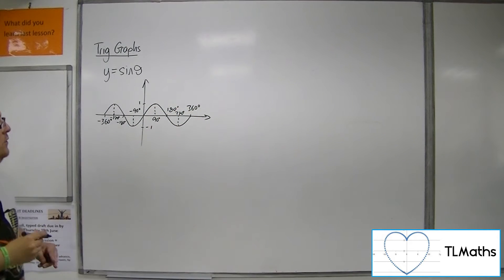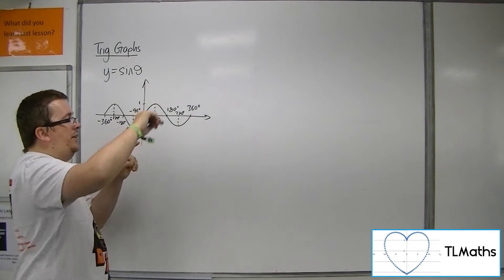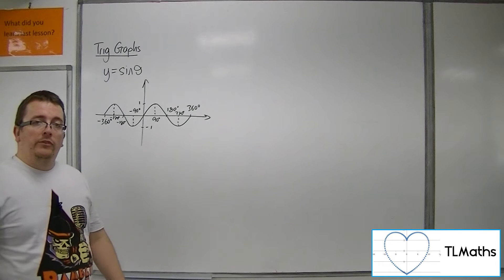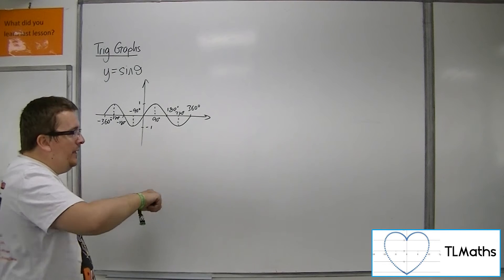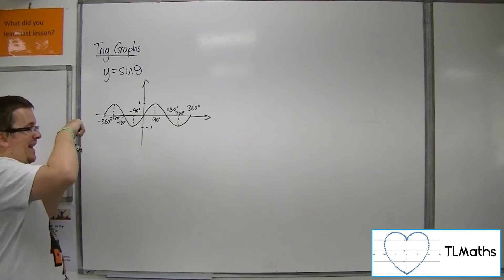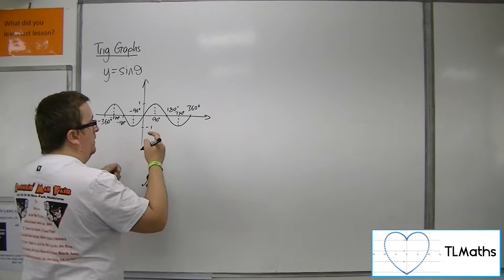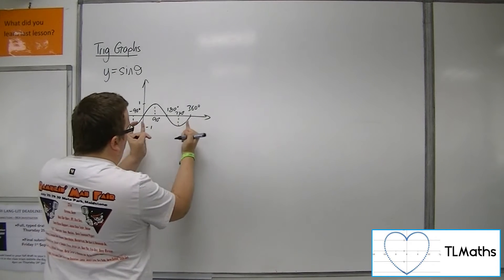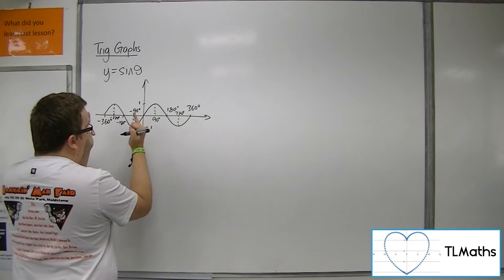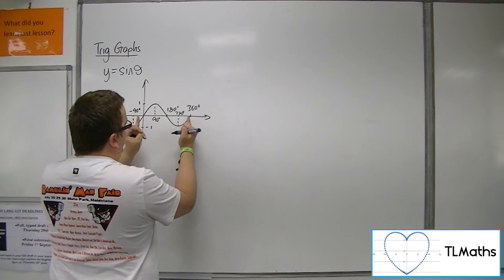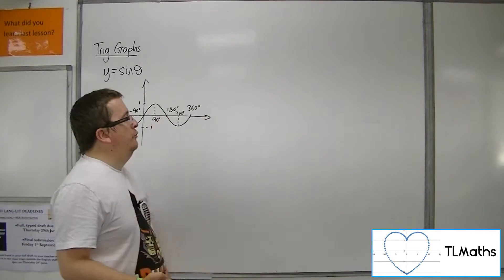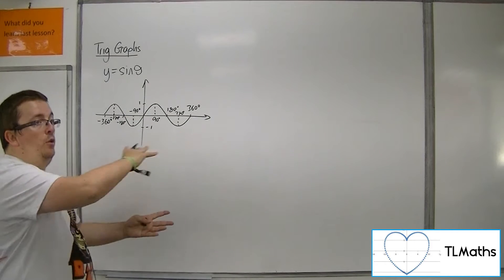The sine curve repeats itself over and over again in both directions. The piece that repeats itself, between 0 and 360, is precisely the same as that piece there, just shifted along. It's that piece that repeats itself over and over again in both directions.